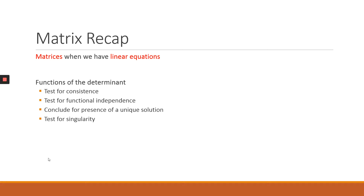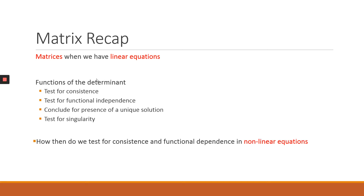We also used the determinant to test for singularity. The major conclusion was that the determinant has to not be equal to zero — if it is equal to zero, then we can conclude otherwise. So now the question is: how do we test for consistency and functional dependence if we are working with nonlinear equations?